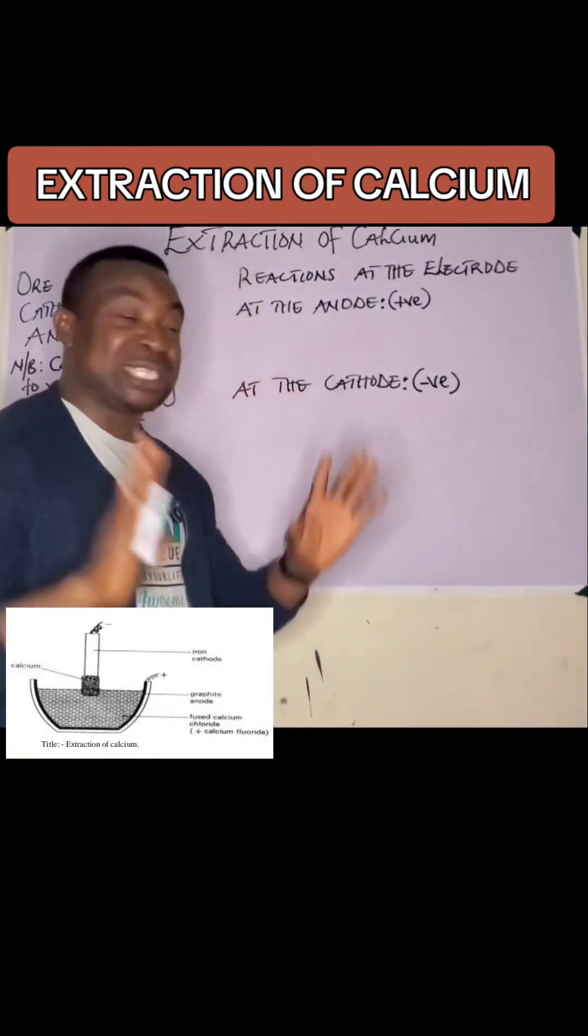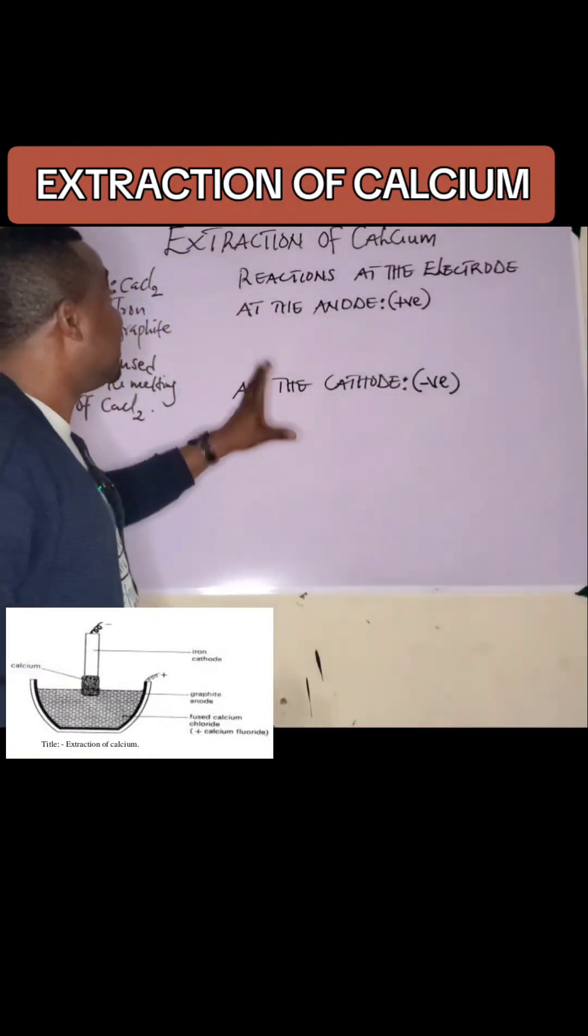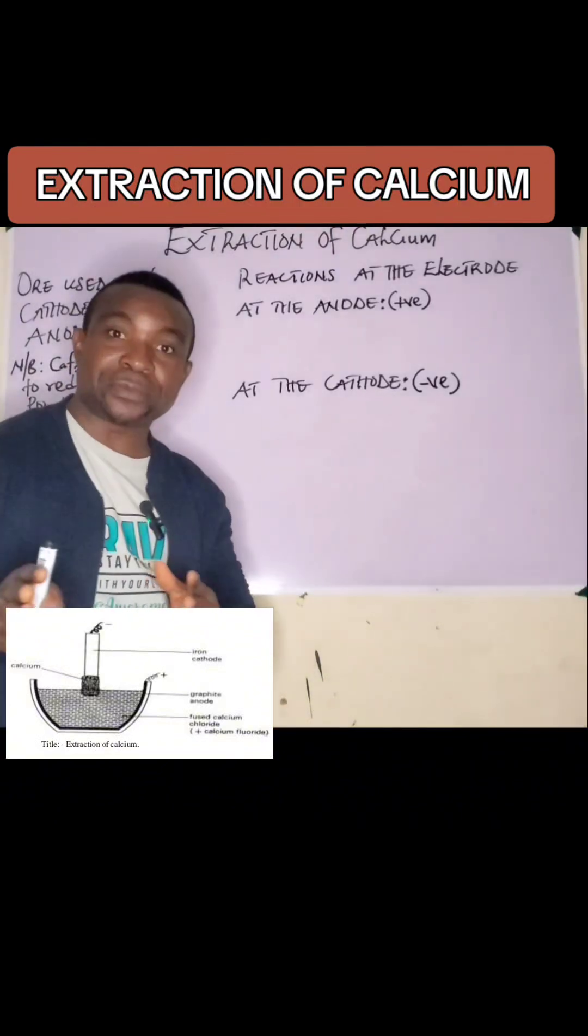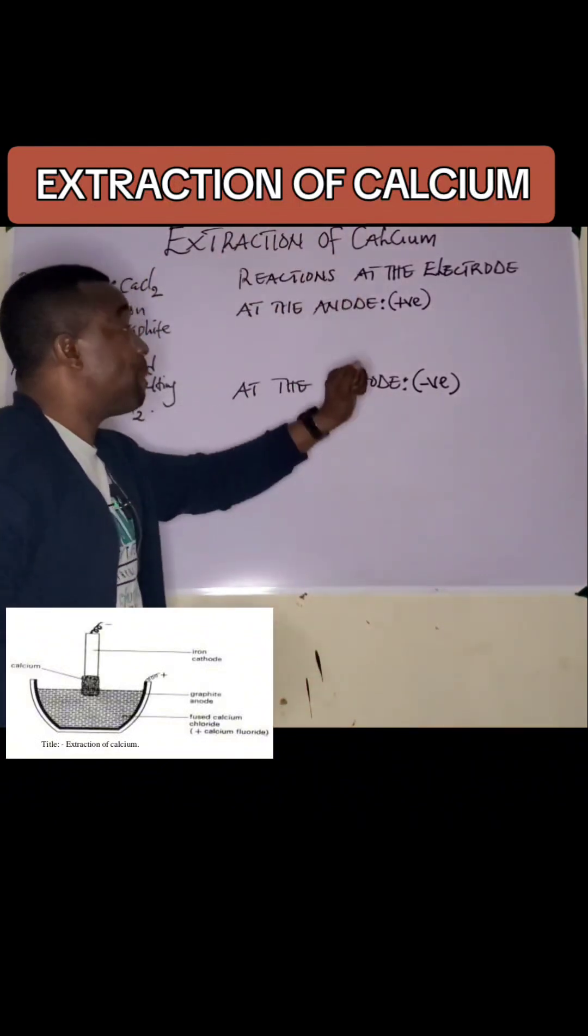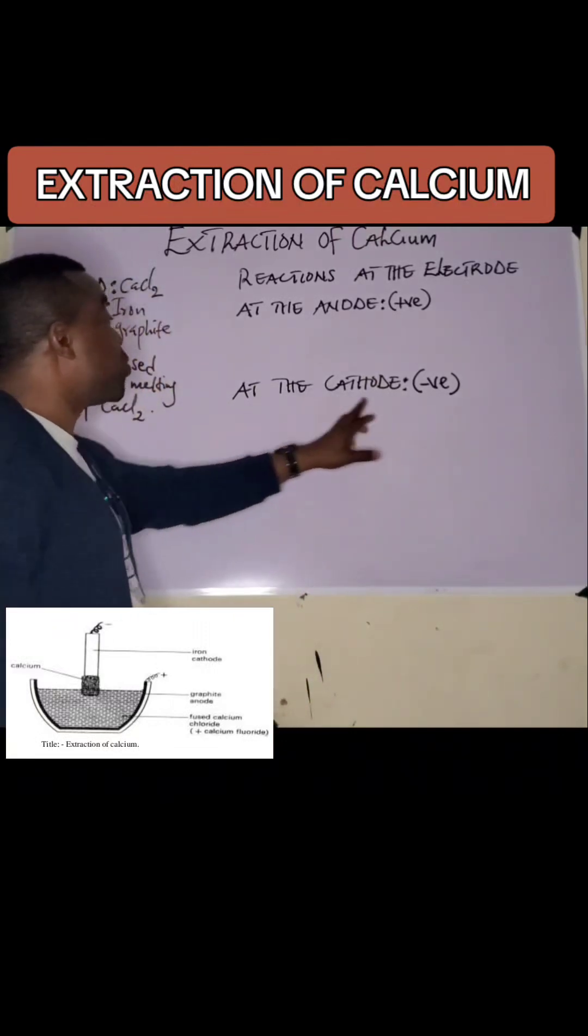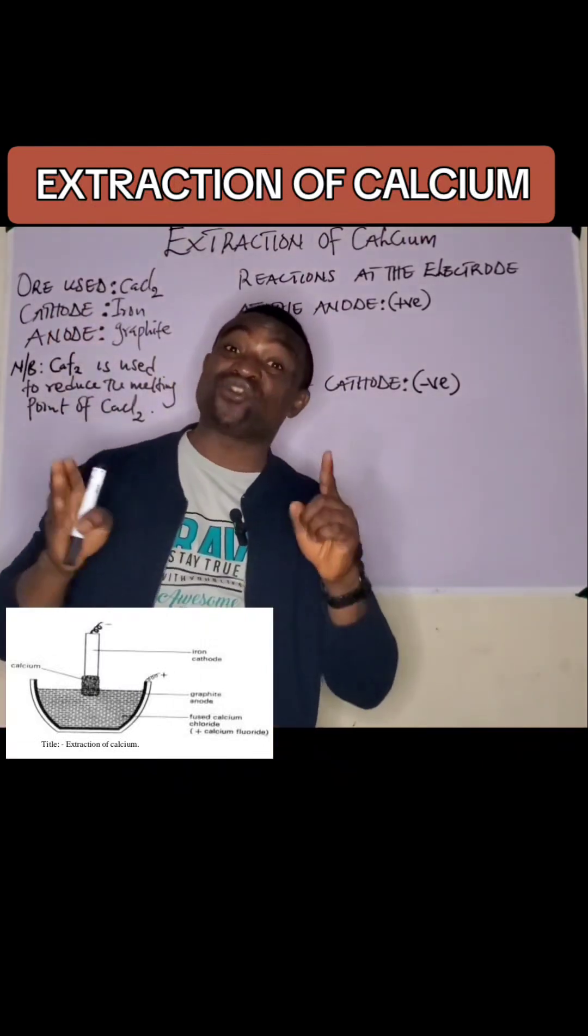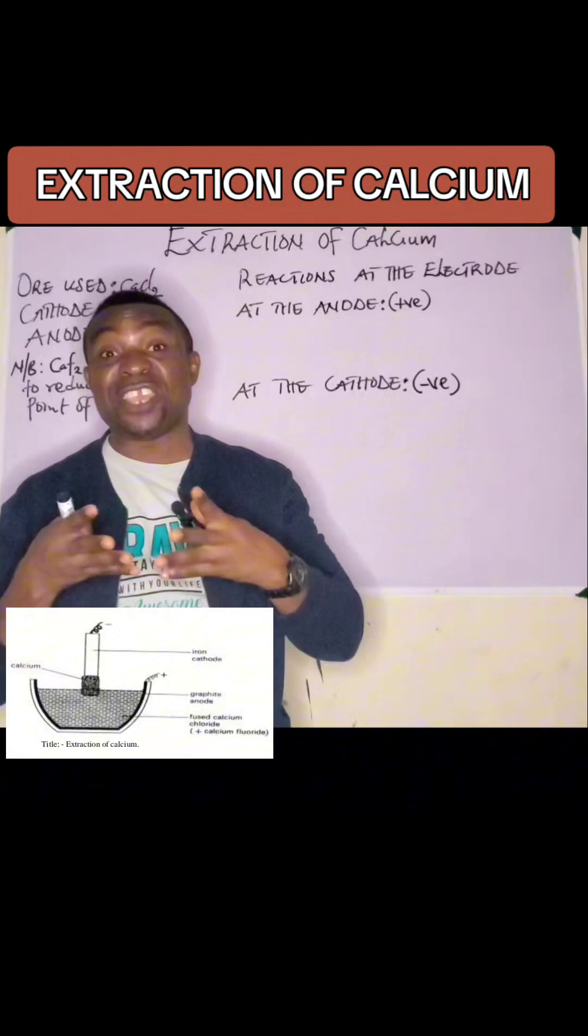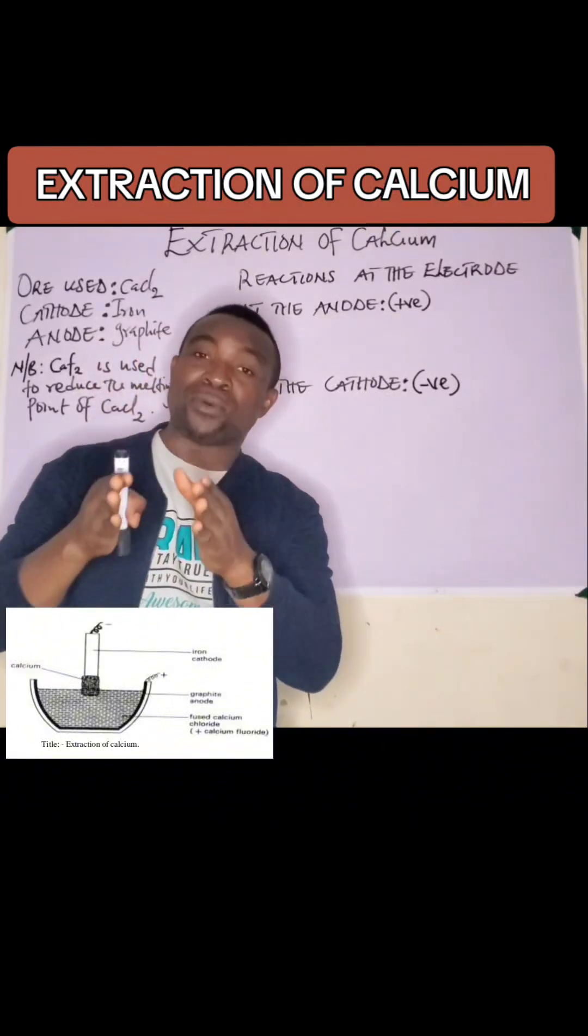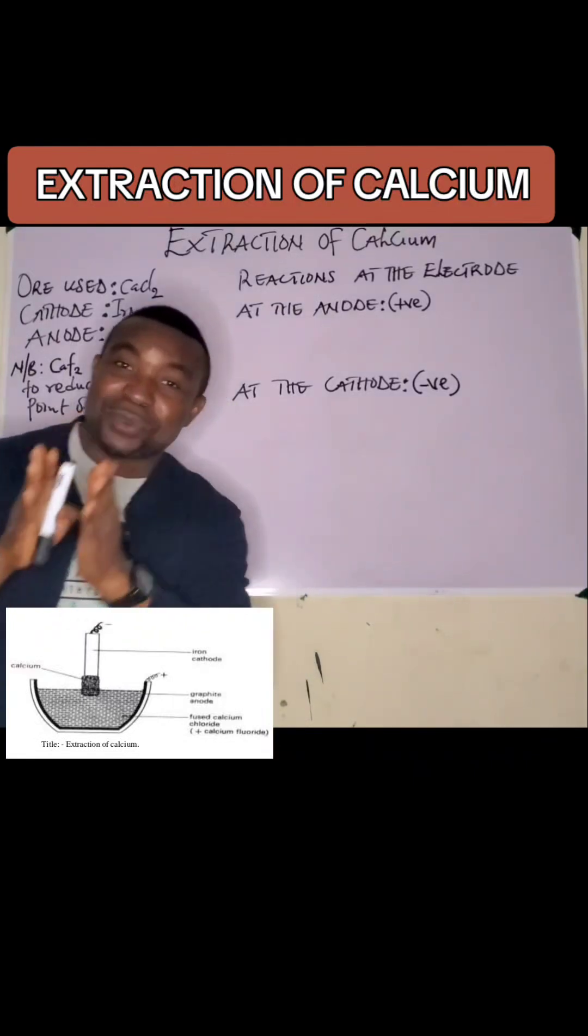Calcium ions will definitely migrate to the cathode, which is the negative electrode, in order to get back the electrons it has lost when they were in ionic state. When this happens, calcium is getting back the electrons in order to be a free metal that is going to be extracted.